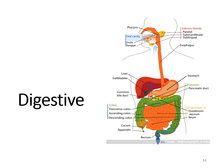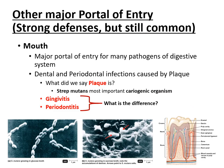Now moving to the digestive system as a major portal of entry. You always have to eat and drink, and water contamination is a major problem worldwide. The digestive issues we'll talk about include foodborne illnesses, contaminated water problems, and dental issues as well.